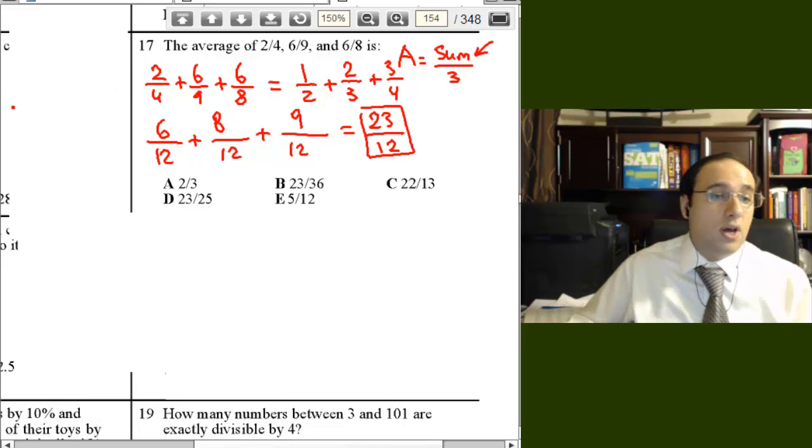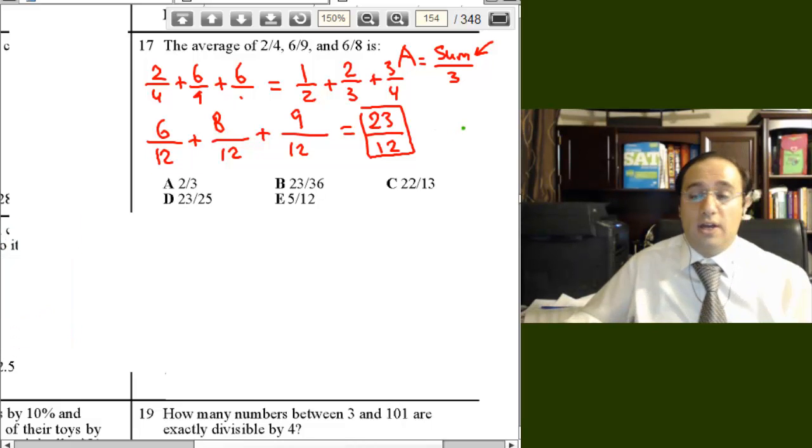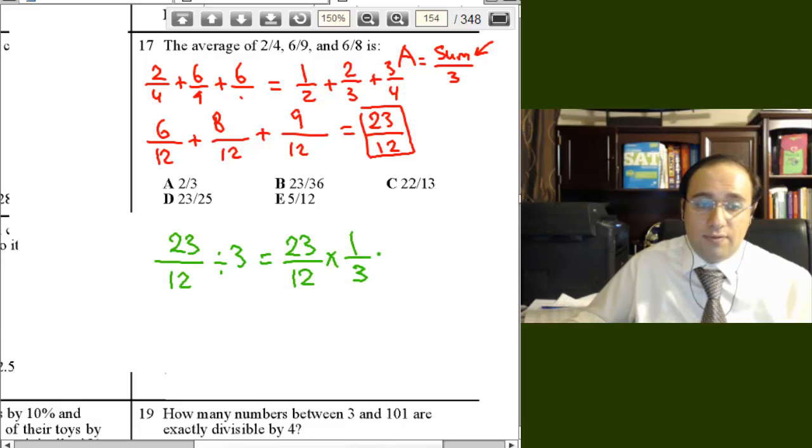Now what do I need to do? I need to find the sum divided by 3, so 23 over 12 divided by 3, which is basically, like Anton is saying, 23 over 12 times the reciprocal, which is a third. Now, try to simplify, you really can't, so the answer is 23 over 36.